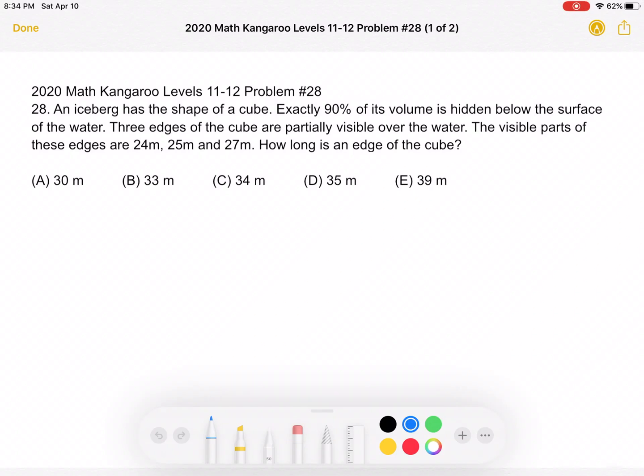This is the 2020 Math Kangaroo, Levels 11-12, Problem Number 28. An iceberg has the shape of a cube. Exactly 90% of its volume is hidden below the surface of the water. Three edges of the cube are partially visible over the water. The visible parts of these edges are 24 meters, 25 meters, and 27 meters. How long is an edge of the cube?